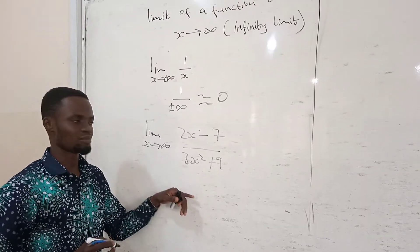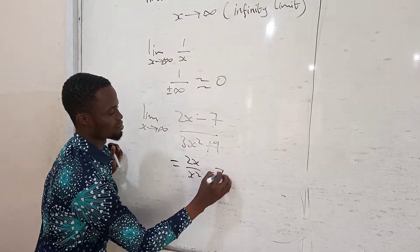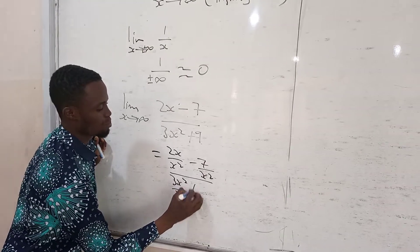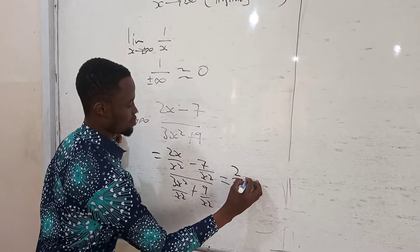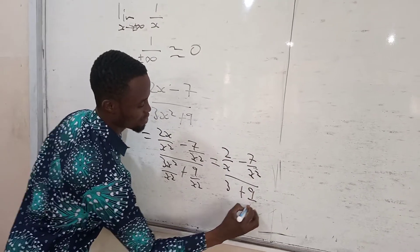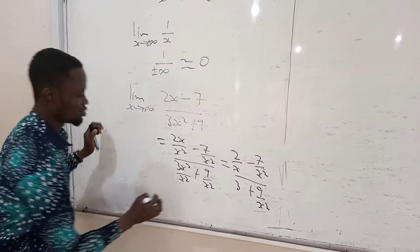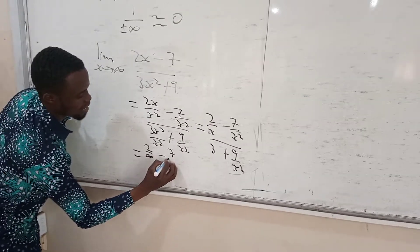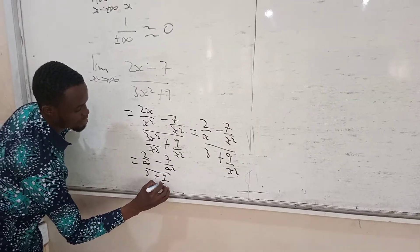So we divide x squared by all terms in the equation. When we do so, we get: 2x divided by x squared, minus 7 divided by x squared, all divided by 3x squared divided by x squared, plus 9 divided by x squared. This simplifies to 2 divided by x, minus 7 over x squared, all divided by 3 plus 9 over x squared.